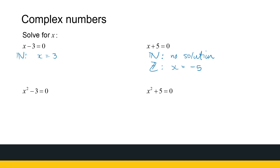Similarly, x squared minus three equals zero has no solution in the integers — there's no whole number I can square and subtract three to get zero. But in the real number system, there are solutions: if x squared equals three, then x equals positive or negative the square root of three. Those are real numbers, so that equation has a solution in the real number system, but not in the integers.